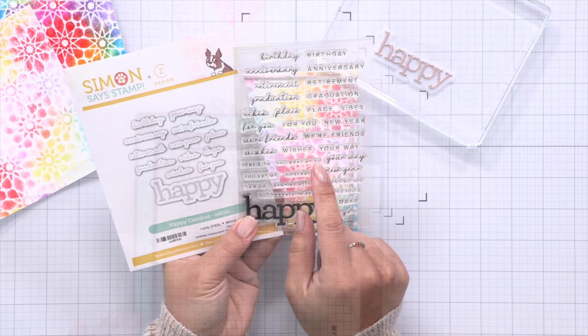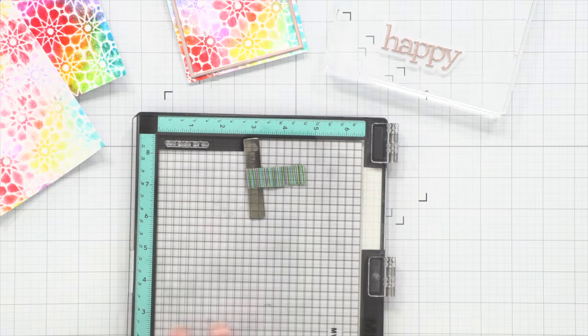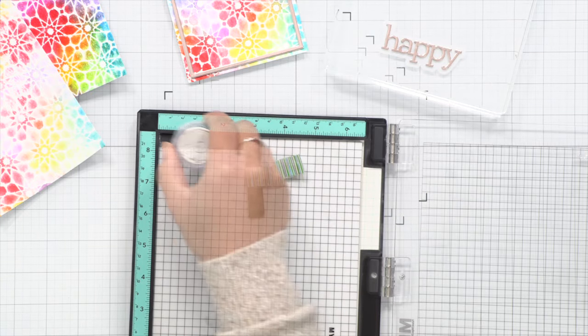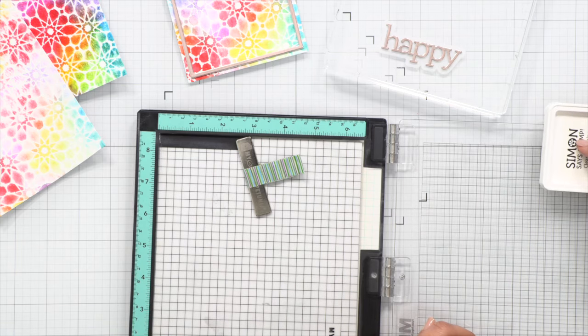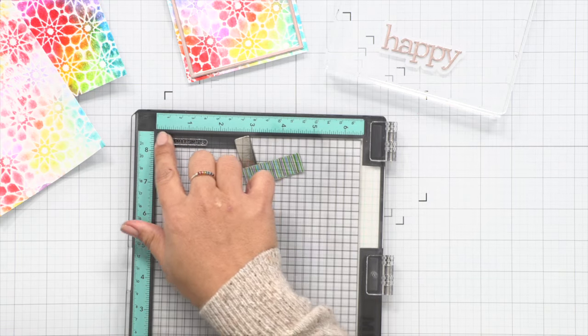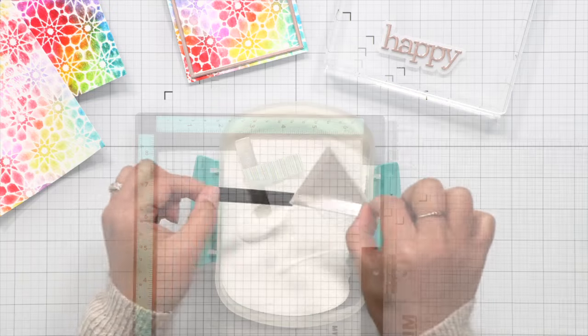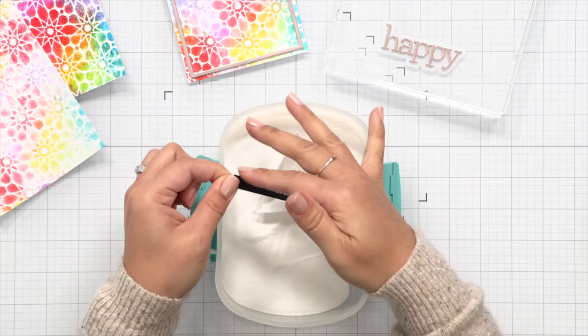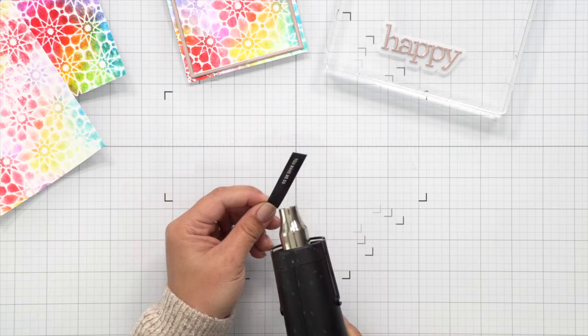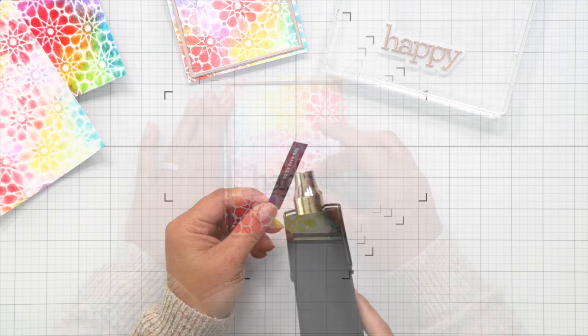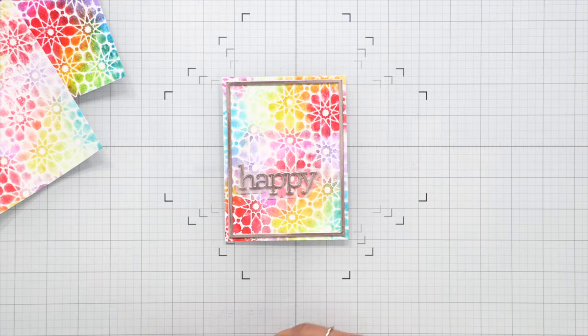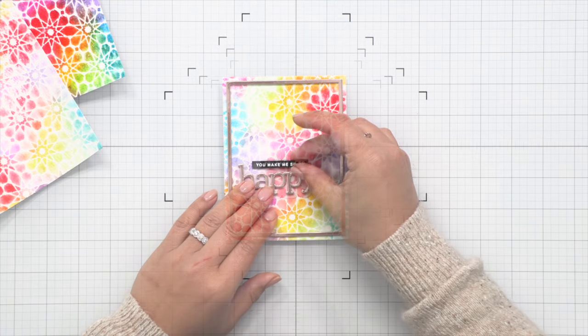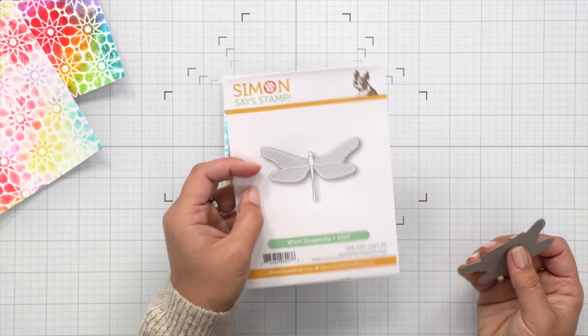This is the happy combo set, and as you can see that word happy does coordinate with that happy die. I'm just going to use a stamp from that stamp set to emboss a sub-sentiment over some black cardstock. I use some clear embossing ink and now I'm adding some white embossing powder and then I'll heat set that strip. Off camera I'll go ahead and cut that down into a nice and even strip, and then I'll lay it over that background but I'm not going to adhere it down just yet. I want to make sure that there's plenty of space for this world dragonfly.